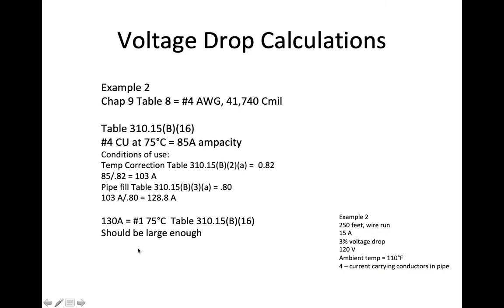Next up, I go to my table 310-15B-16 ampacity table, run my finger down the column to the 75 degree insulation column, and a number 4 copper conductor will handle 85 amps. So I need a conductor that can handle 85 amps to get 15 amps from point A to point B at this lower voltage.